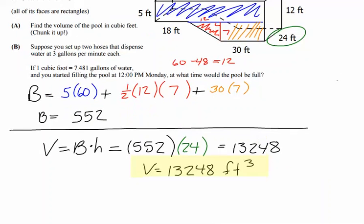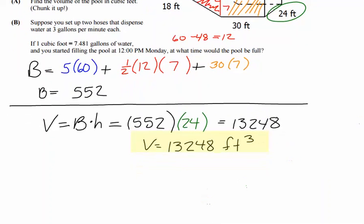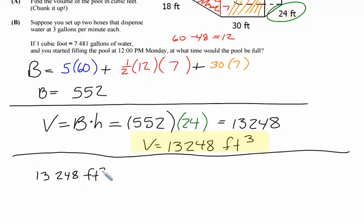Now part B is where this gets kind of enjoyable to some extent. Factor labeling, keeping track of units, it's important. So what we're going to do is start off with the volume that we have, 13,248 cubic feet. Now we want to convert out of cubic feet and into another unit of measure. So if we want to get rid of cubic feet, we can use what I just highlighted in green.